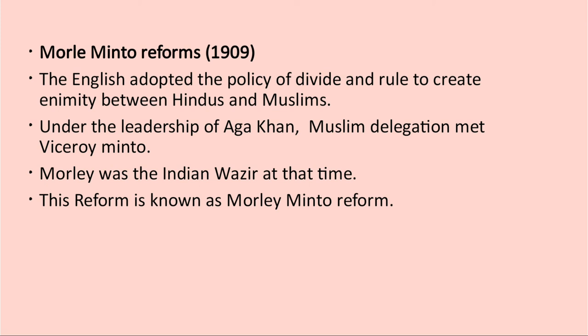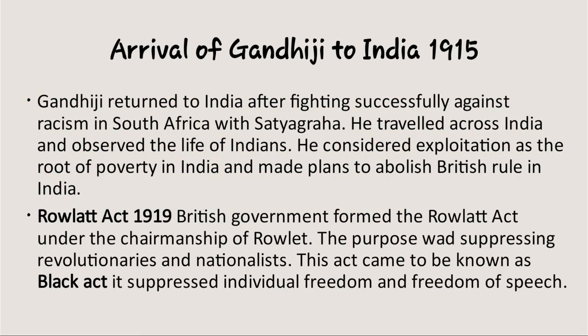Next topic is the Morley-Minto Reforms, which was the first part of the divide-and-rule policy of the Britishers. Then, the important topic is the arrival of Gandhiji to India. The final phase of India's freedom struggle began with Gandhiji's arrival. After successfully finishing his work in South Africa against the Britishers, Gandhiji came to India. His political guru was Gopalakrishna Gokhale and his spiritual mentor was Srimad Rajchandra. He travelled from one part of India to another, understood the problems of the Indians, identified the root cause of India's poverty as exploitation, and made plans to abolish British rule in India.